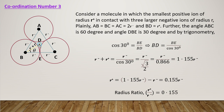Angle ABC is 60 degrees, and angle DBE is half of that, so it equals 30 degrees. Now applying trigonometry to the right-angle triangle: cos θ = cos 30° = BE divided by BD, where BE is the adjacent side and BD is the hypotenuse side.